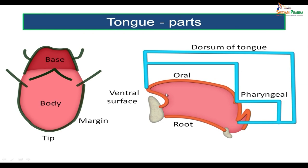So the tongue has two surfaces — a dorsal surface and a ventral surface. The dorsal surface is divided into an anterior part which is the oral part located in the oral cavity, and a posterior part which is the pharyngeal part located in the pharynx. On the dorsum, you see a prominent V-shaped sulcus called the sulcus terminalis. The part in front of the sulcus terminalis is the body of the tongue, the posterior part is called the base, and the front point is the tip. The sides are called the margins of the tongue.